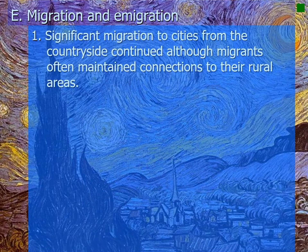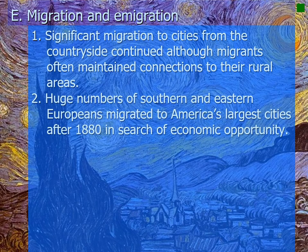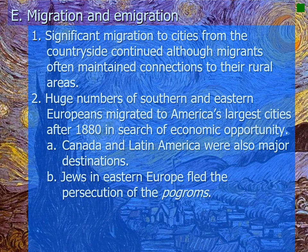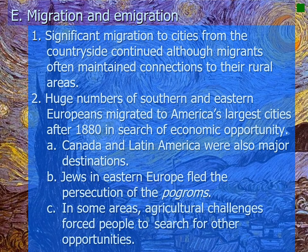Significant migration to cities from the countryside continued, though migrants often maintained connections to their rural areas. In the 1880s, huge numbers of Southern and Eastern Europeans migrated to America's largest cities after 1880 in search of economic opportunity, leading to rapid growth in America's population. Canada and Latin America were also major destinations. Jews in Eastern Europe fled the persecution of pogroms — mass massacres — taking place in places like Russia. In some areas, agricultural challenges also forced people to search for other opportunities.